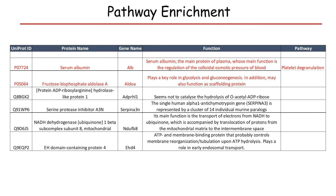We annotate the proteins involved in the signature METO sites to see which pathways are enriched. Serum albumin is the modified protein commonly identified by both recursive feature elimination and Boruta methods across all splits, while Aldolase A is identified by recursive feature elimination across 8 splits. Using Reactome, we observed that the pathway these proteins commonly enrich is platelet degranulation. Currently, we are also incorporating occupancy of PTM sites to see if we get similar signatures and pathways.